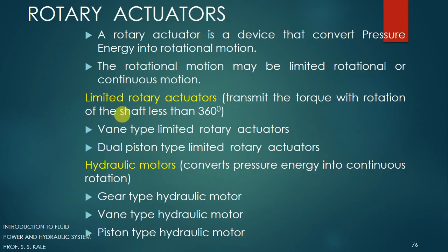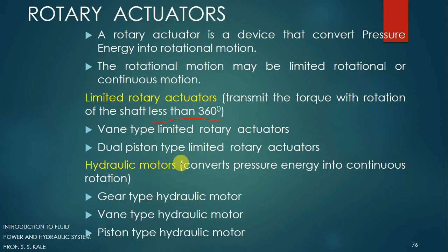The next type is the gear type of hydraulic motor. Under hydraulic motors, we have the gear type, the vane type, and the piston type of hydraulic motor. These motors will provide continuous rotary motion at the outlet.